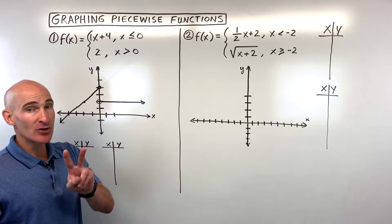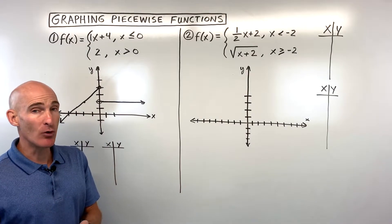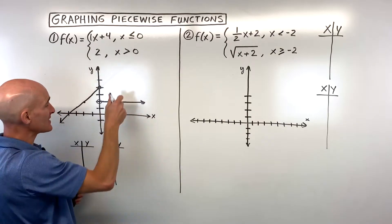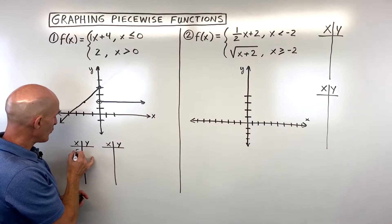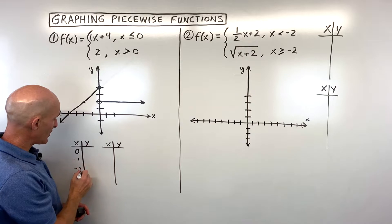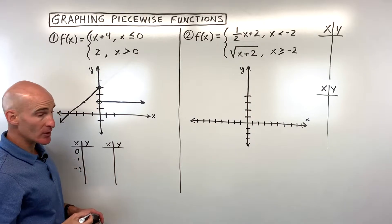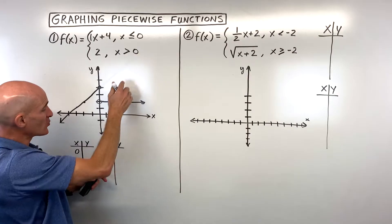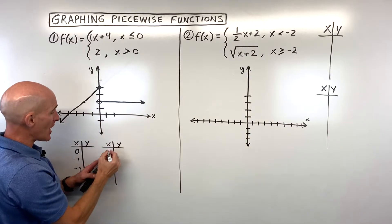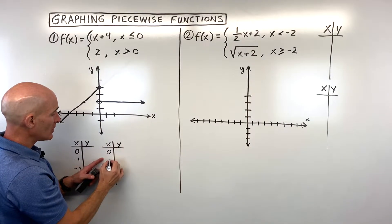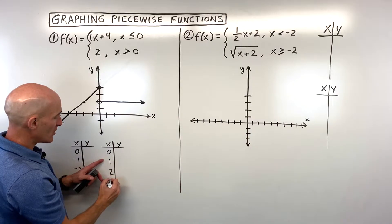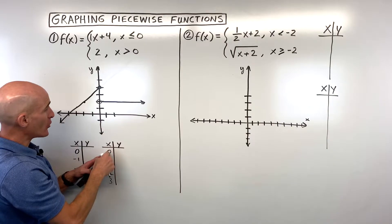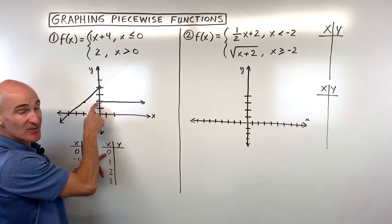Method number 2 is the table method, where we make two tables. For the first piece, where x is less than or equal to 0, we pick values like 0, negative 1, and negative 2. For the second piece, where x is greater than 0, we'd still include 0 in our table — 0, 1, 2, 3 — but since it's greater than 0 we'll draw an open circle at that point.